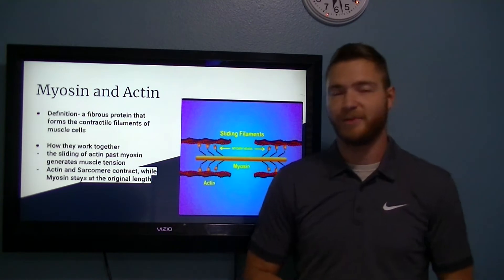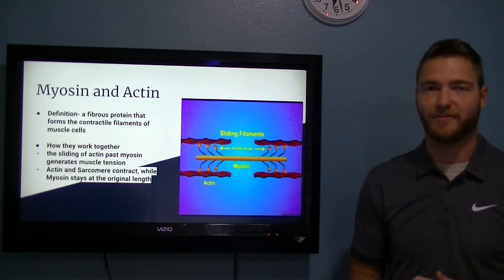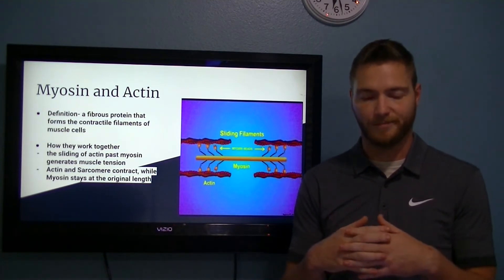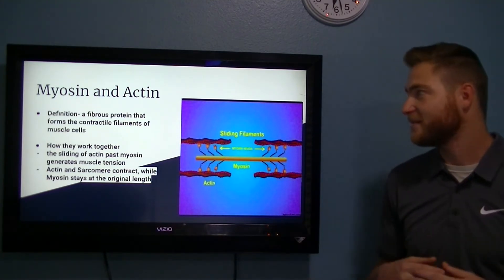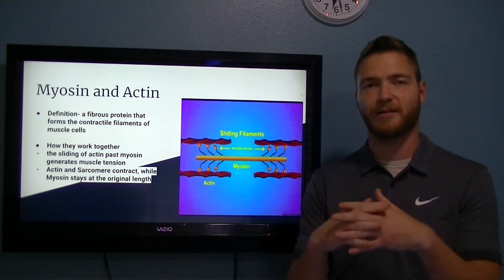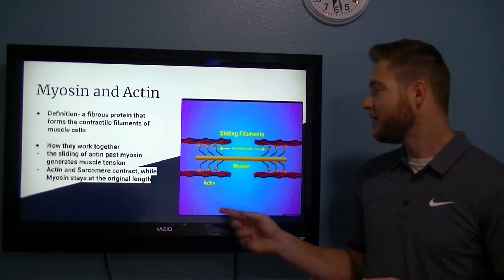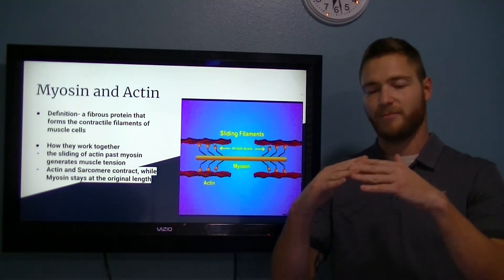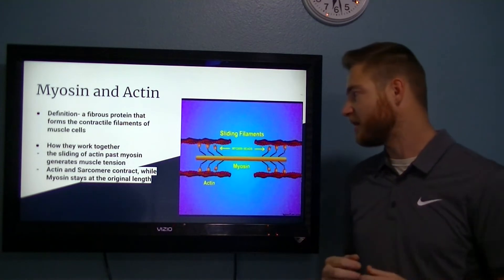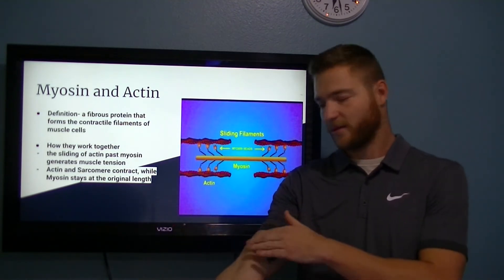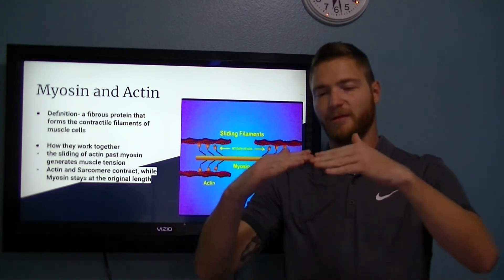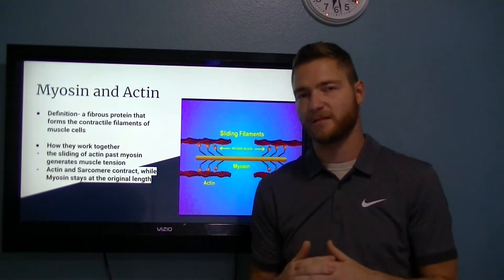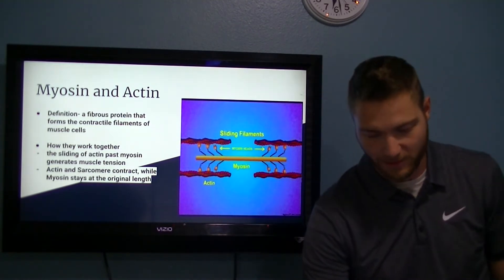Myosin and actin are your biggest parts of muscle fibers. They are fibrous proteins that form the contractile filaments of muscle cells — basically, they help your muscles contract and uncontract. Myosin always stays the same length, and actin is what slides over myosin. So if your muscle is at full length, like the bicep, as you bring the muscle to contract, the actin just slides over myosin. That's the easiest way to explain how muscles contract and uncontract.